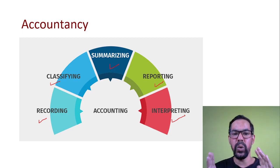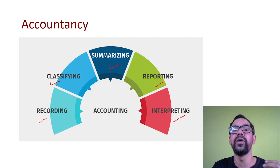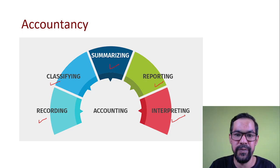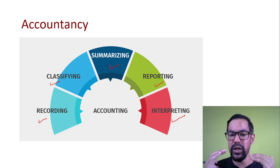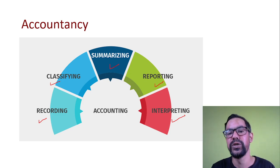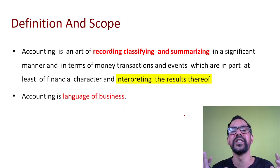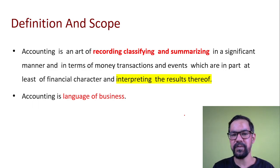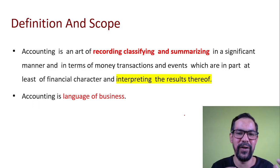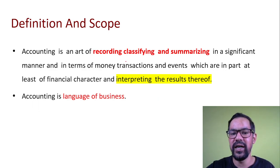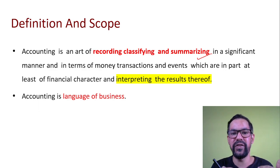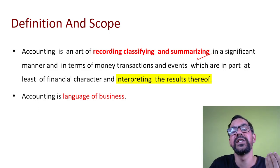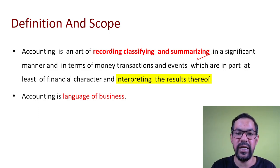On the basis of those reports we interpret the data and make future decisions. Being a stakeholder, we identify strong areas, weak areas, and alternatives for investment to maximize shareholder wealth. This is the entire process used in accountancy. Basically it is an art — an art of recording, classifying, and summarizing in a significant manner, meaning we do have some standards that companies must maintain.